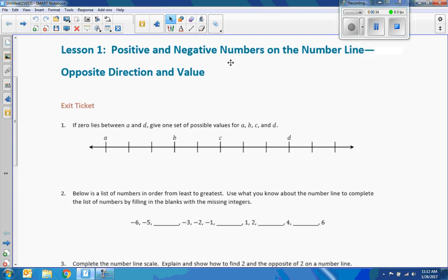Positive and negative numbers on the number line, opposite direction. If zero lies between a and D, give one set of possible values for a, B, C, and D. Okay, so let me talk about the word 'between' for starters.